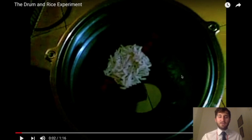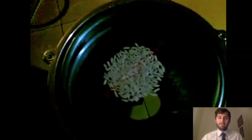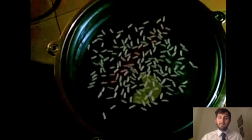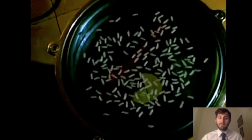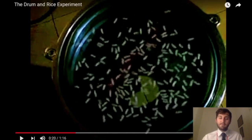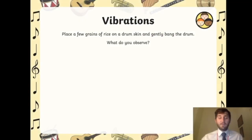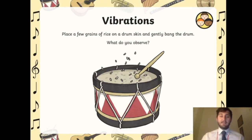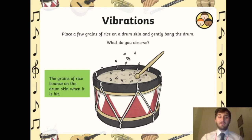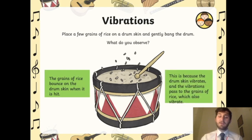Here we have a drum with some rice in the middle and someone is going to gently play it, and we're going to see what happens to the rice. You can see that every time the drum is hit, the vibrations of the skin make the rice almost look like they're dancing. The louder the drum goes, the more the rice begins to dance. The grains of rice bounce on the drum skin when it is hit because the drum skin vibrates and the vibrations pass to the grains of rice, which also vibrate.